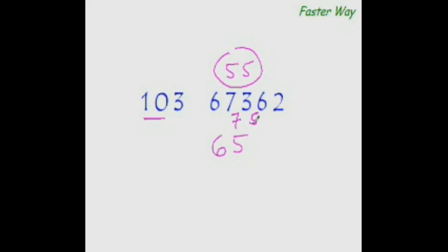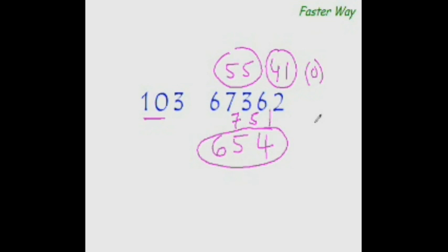10 goes into 41 four times — 4 times 10 is 40 — so the remainder is 1. Our new dividend would be 12 minus 3 times 4, which is 12, so 12 minus 12 is 0. The moment you have 0 as the dividend, you know that this is your answer. It is based on the same logic: dividing by 103 might be difficult, but dividing by 10 is the simplest operation in mathematics.